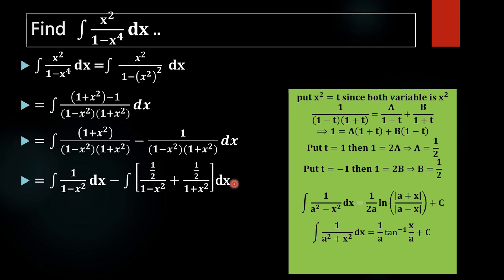That is, we will represent 1 equal to one half plus one half. In the same way, we are representing this in terms of 1 minus x squared and 1 plus x squared. For finding the values of A and B, we multiply each term by 1 minus t times 1 plus t. Then what remains is: A times 1 plus t after 1 minus t cancels, and B times 1 minus t after 1 plus t cancels.